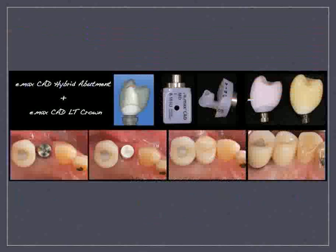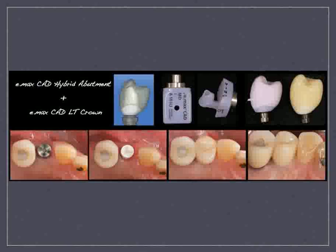All right, let's talk abutment solutions. We're going to go through some of this quickly as a recap if you were at the course, and if you were not, please feel free to ask a lot of questions. We've got a couple of options when talking about Emax, which is the very first true chair-side solution for us to build our own custom abutment solutions. We have the ability to build an Emax hybrid abutment — what we'd traditionally call a custom abutment — and then fabricate a separate Emax crown. We can also fabricate an Emax hybrid abutment crown, which is essentially a screw-retained prosthesis all in one piece.